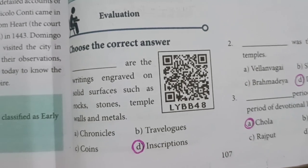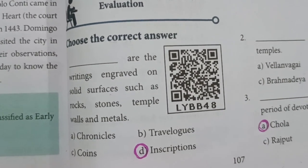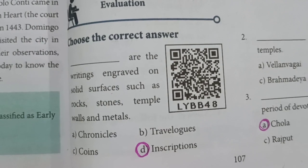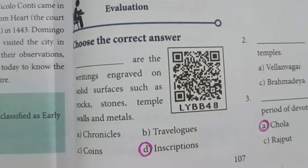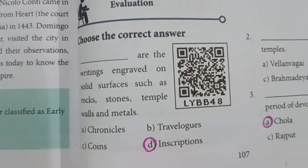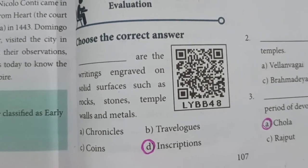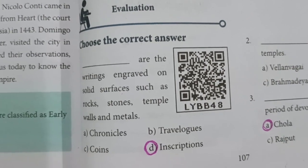First question: Dash are the writings engraved on solid surfaces such as rocks, stones, temple walls and metals. The answer is D — Inscriptions.